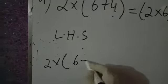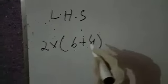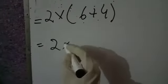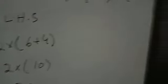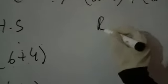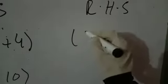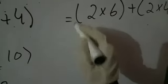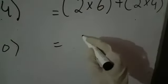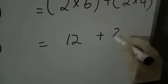Taking the left hand side: 2 into (6 plus 4). You will solve the bracket first — 6 plus 4 is 10, then 2 multiply by 10 gives 20. The answer of the left hand side is 20. Now taking the right hand side: 2 into 6 plus 2 into 4. Solving: 2 into 6 is 12, plus 2 into 4 is 8, and 12 plus 8 is 20.